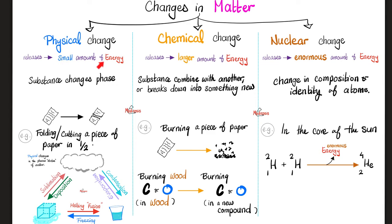Physical change — small amount of energy. Chemical change — larger. Nuclear change — enormous. In physical changes, the substance changes phase. For example, ice became water. Another example is folding a piece of paper into two or cutting it into two pieces — the paper is still paper. That's a physical change.